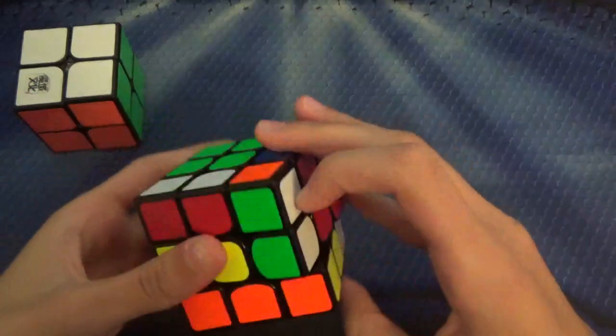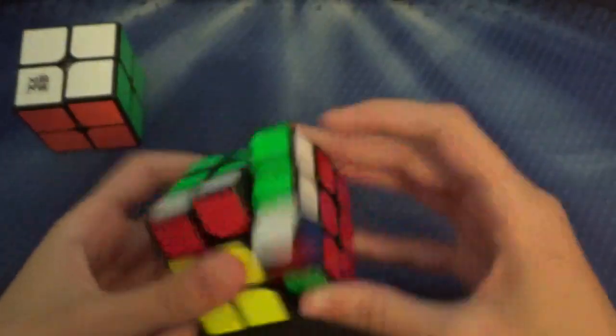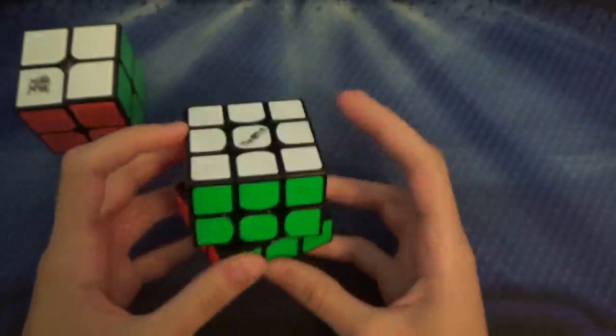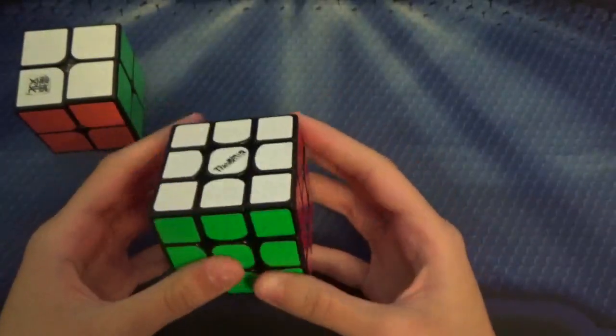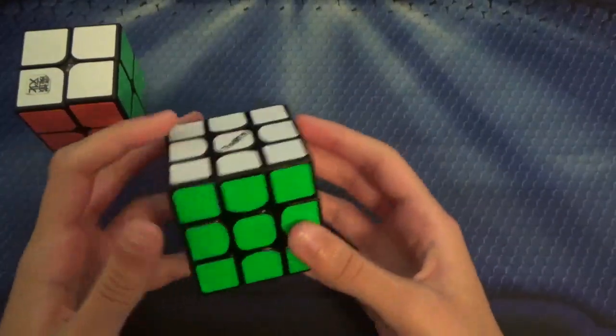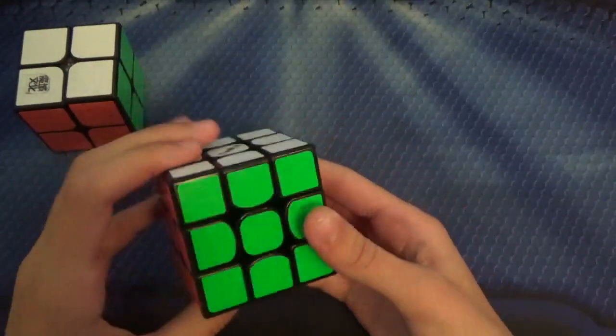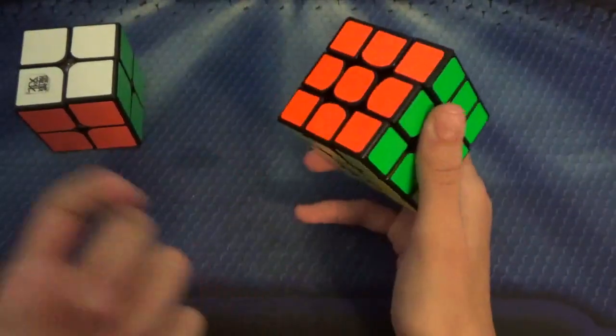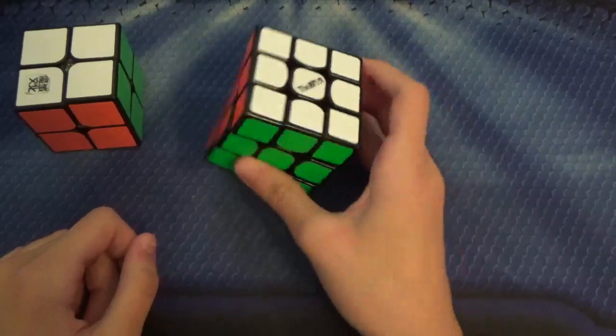For 3x3, this is the Valk 3. I've broken a lot of PBs on this cube, including my average of 5, which is now a 9.9 something. I'll be trying it in comp, and if things go bad, I'll probably just switch to my Gans. Average-wise, sub 11 average, and single, just a sub 10 single.